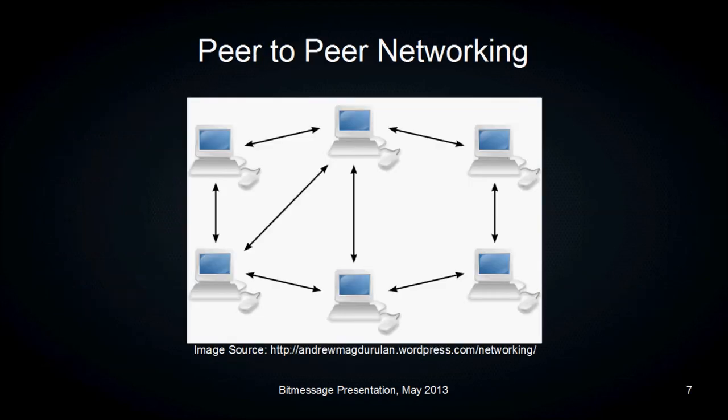Here's what a typical peer-to-peer networking topology looks like. There are multiple paths between all of the clients, but not all clients are connected to each other — you are only connected to a handful of clients, and they in turn are connected to another handful. With BitMessage, if you're allowing incoming connections, you typically will have 50, 100 or more connections at a time. If you are only using outgoing connections, that's limited to about 8 connections.